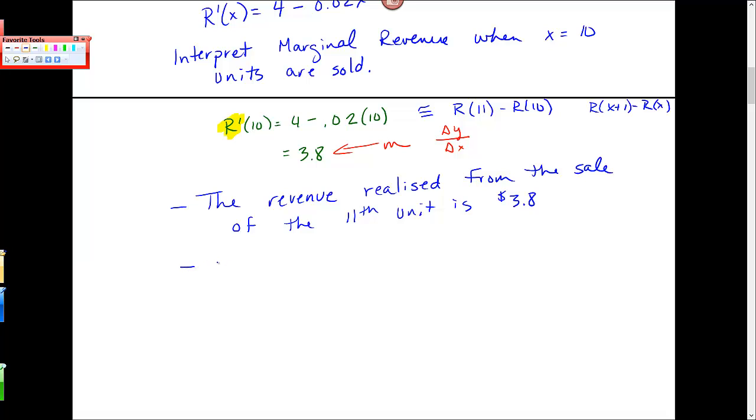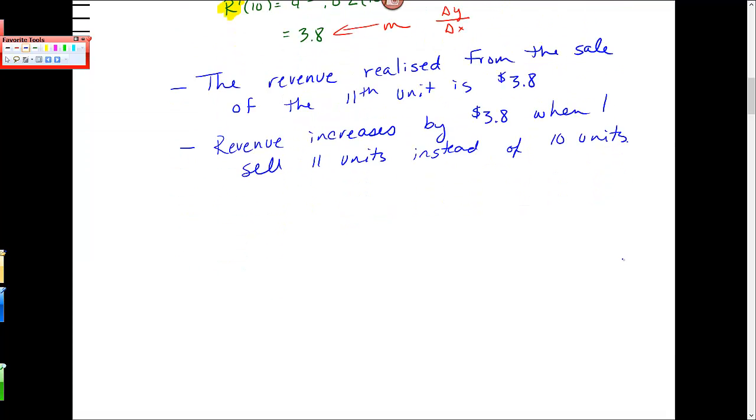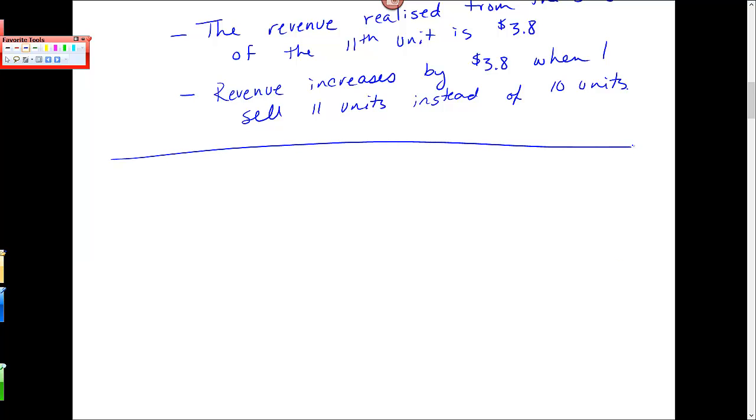Another interpretation would be, in terms of slope, revenue increases by $3.80 when I sell 11 units instead of 10 units. And similarly for profit. So the profit function will increase or decrease depending on the same kind of interpretation of this marginal analysis.